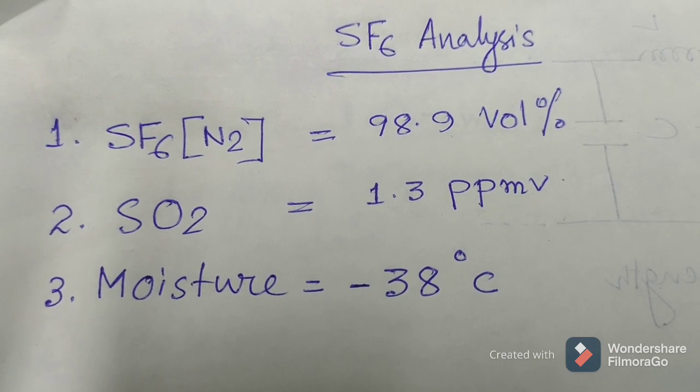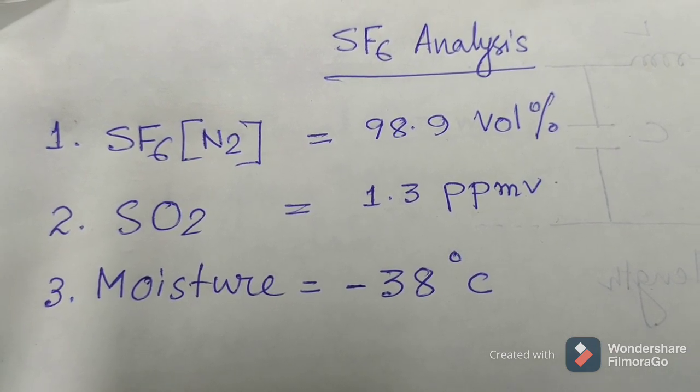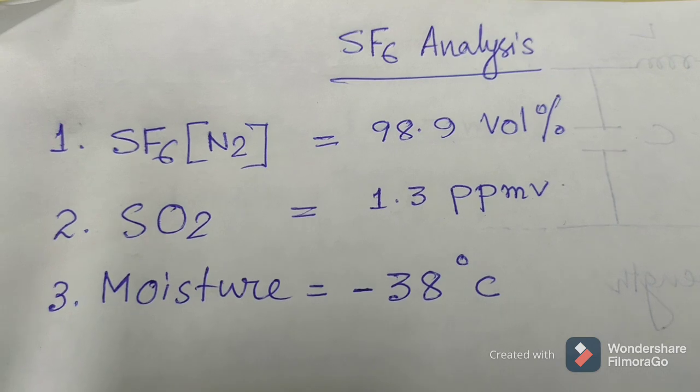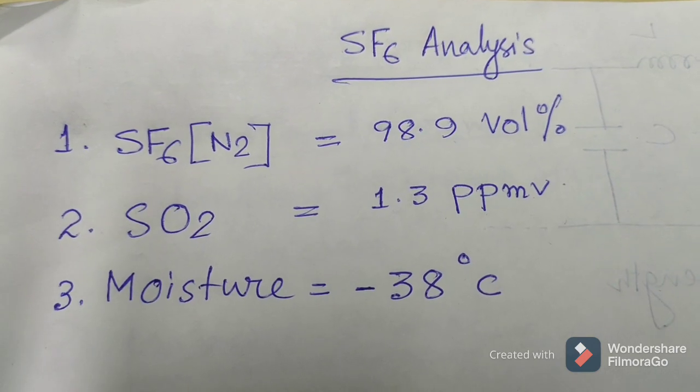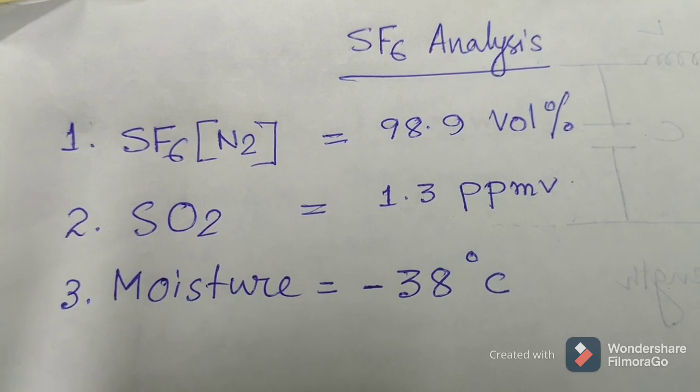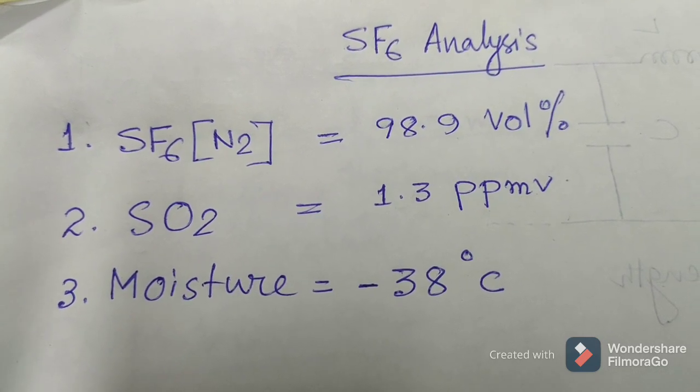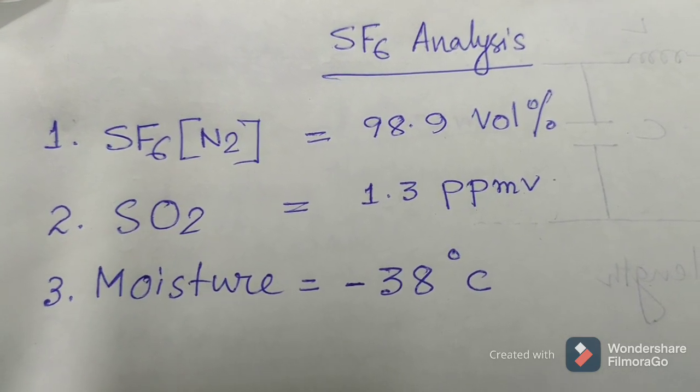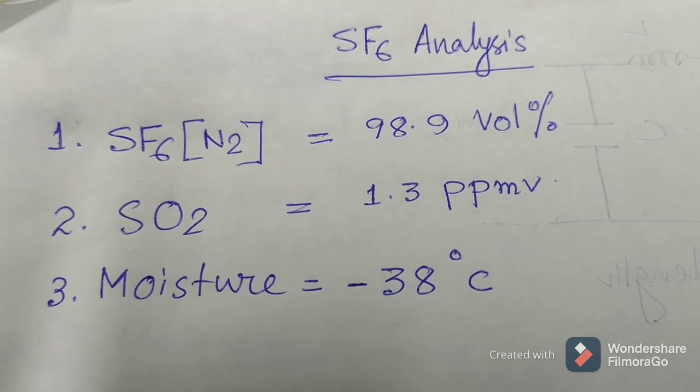What is SF6? SF6 is sulfur hexafluoride gas that is normally used as the arc quenching medium for different types of breakers at different voltage levels.